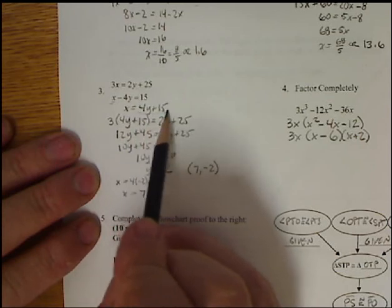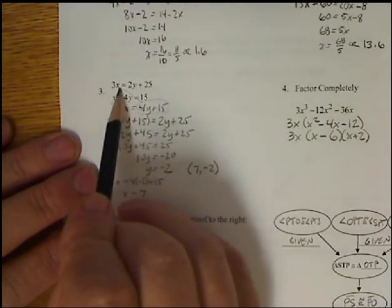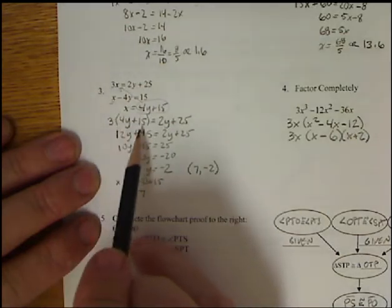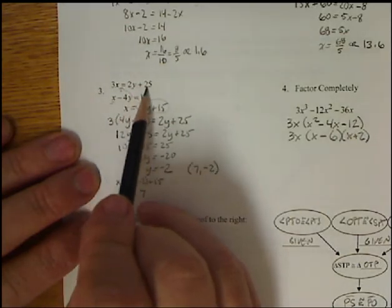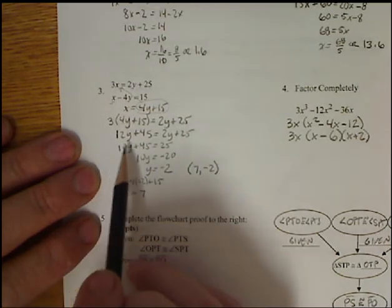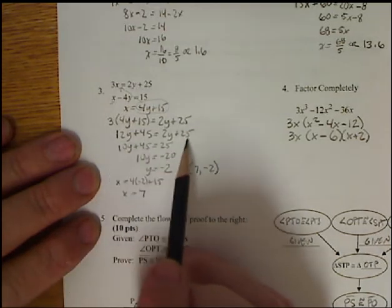Took the 4y plus 15, and I plugged it into the x up here. So I have three times, in parentheses, 4y plus 15 is equal to 2y plus 25. Distribute, I get 12y plus 45 equals 2y plus 25.